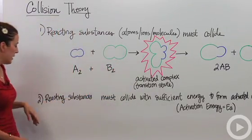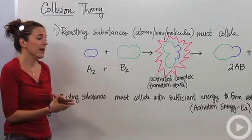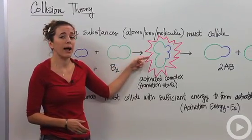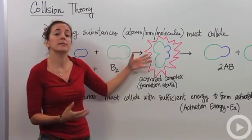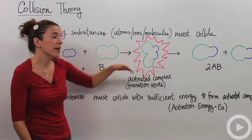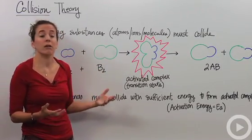The second one says the reactant substances must collide with sufficient energy in order to form that activated complex. Because this activated complex is extremely high in energy, very unstable. So they must collide with a certain amount of energy to get to this point. If they don't collide with a good amount of energy, then they're actually not going to react at all.